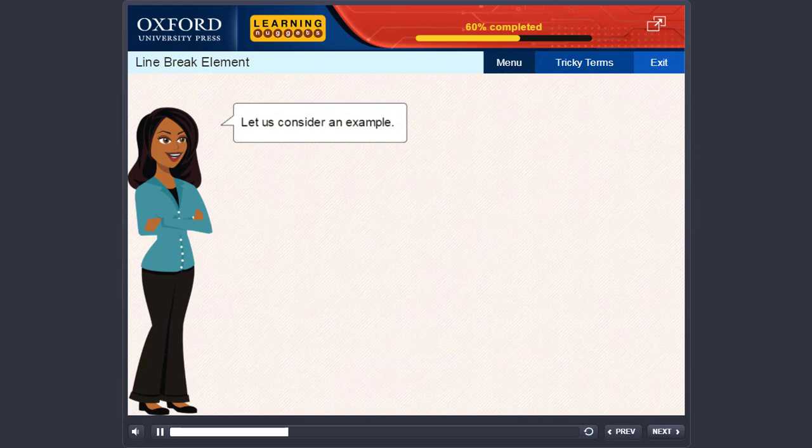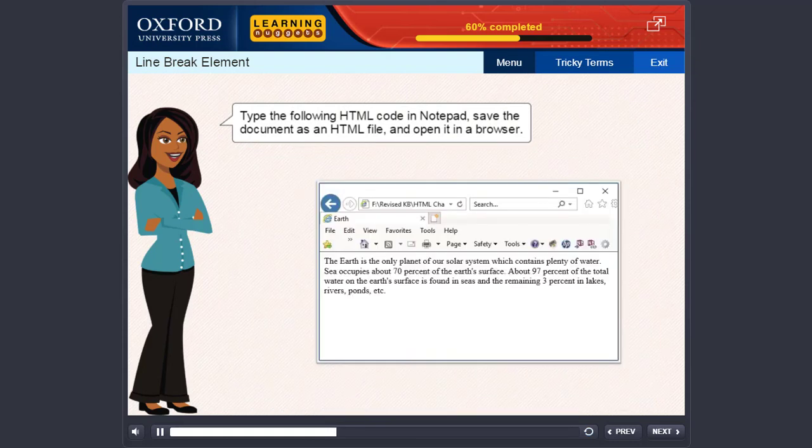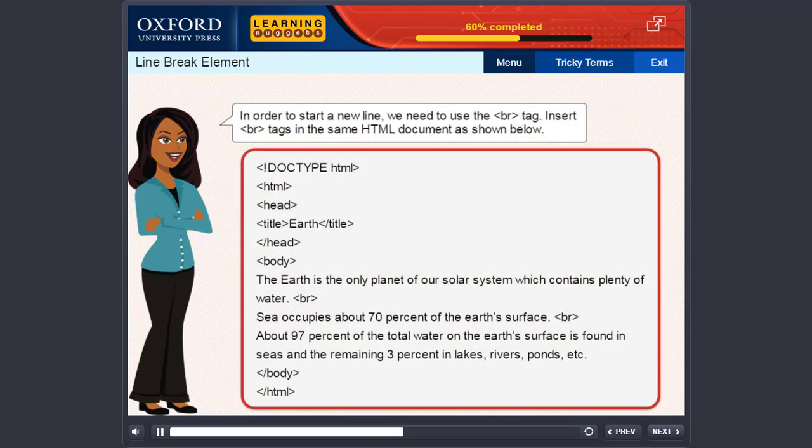Let us consider an example. Type the following HTML code in Notepad. Save the document as an HTML file and open it in a browser. You will notice that though our text is in three paragraphs, the browser displays it as a single paragraph. In order to start a new line, we need to use the BR tag.